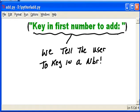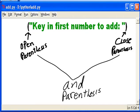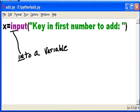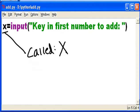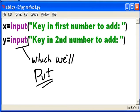We tell the user to key in a number. Put it in quotes and parentheses. We're going to put that number which the user will key in into a variable called X.